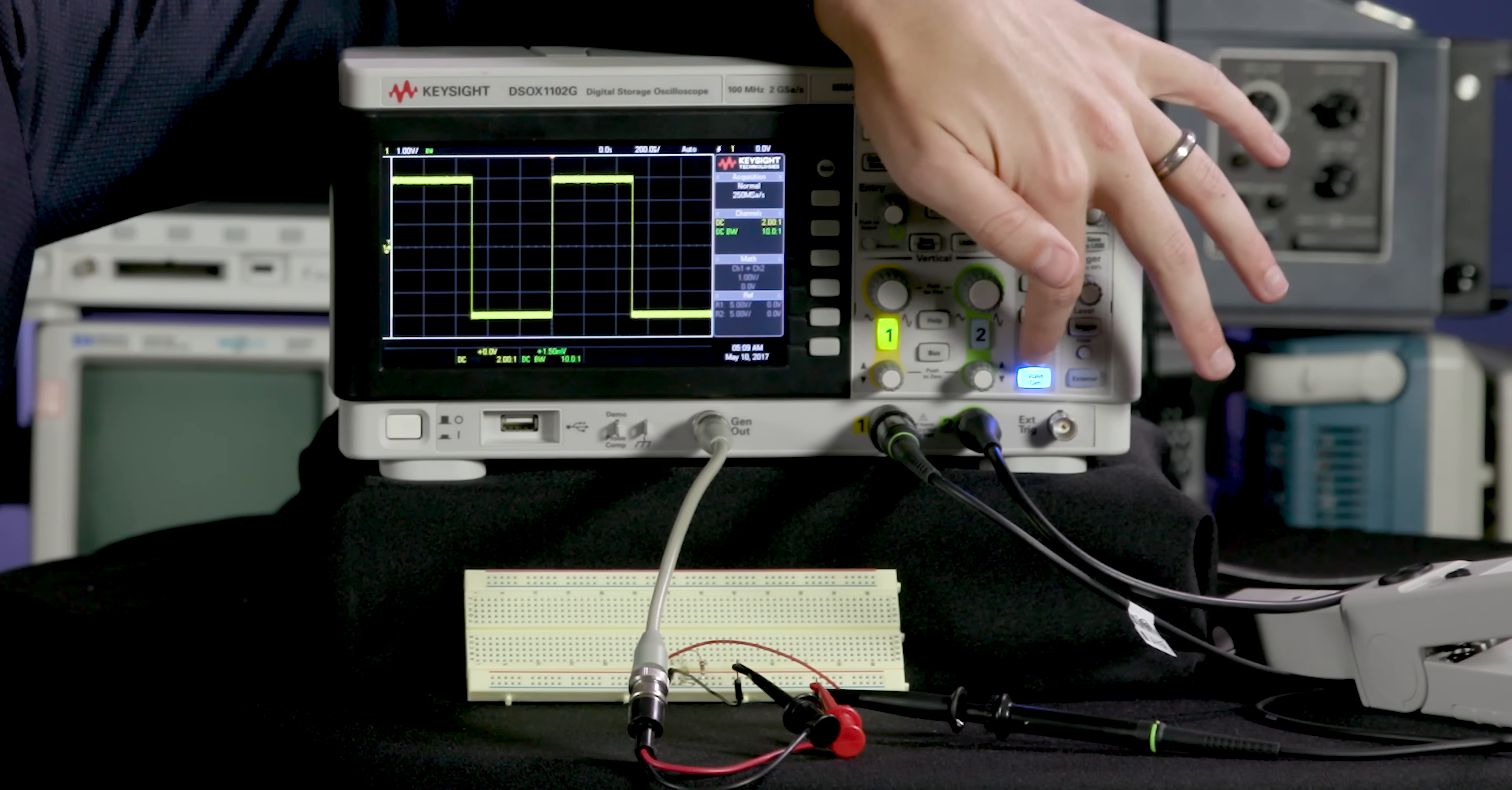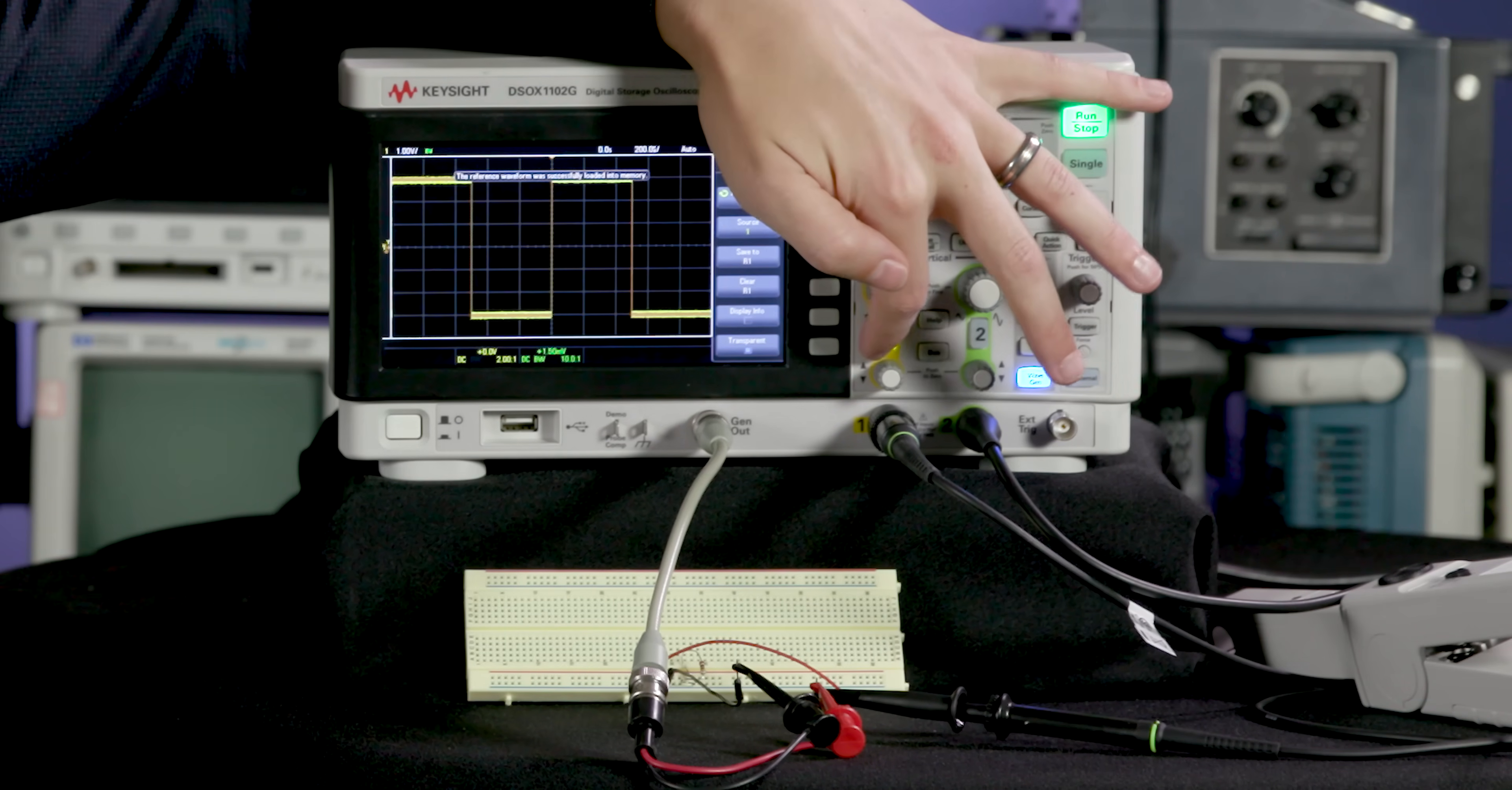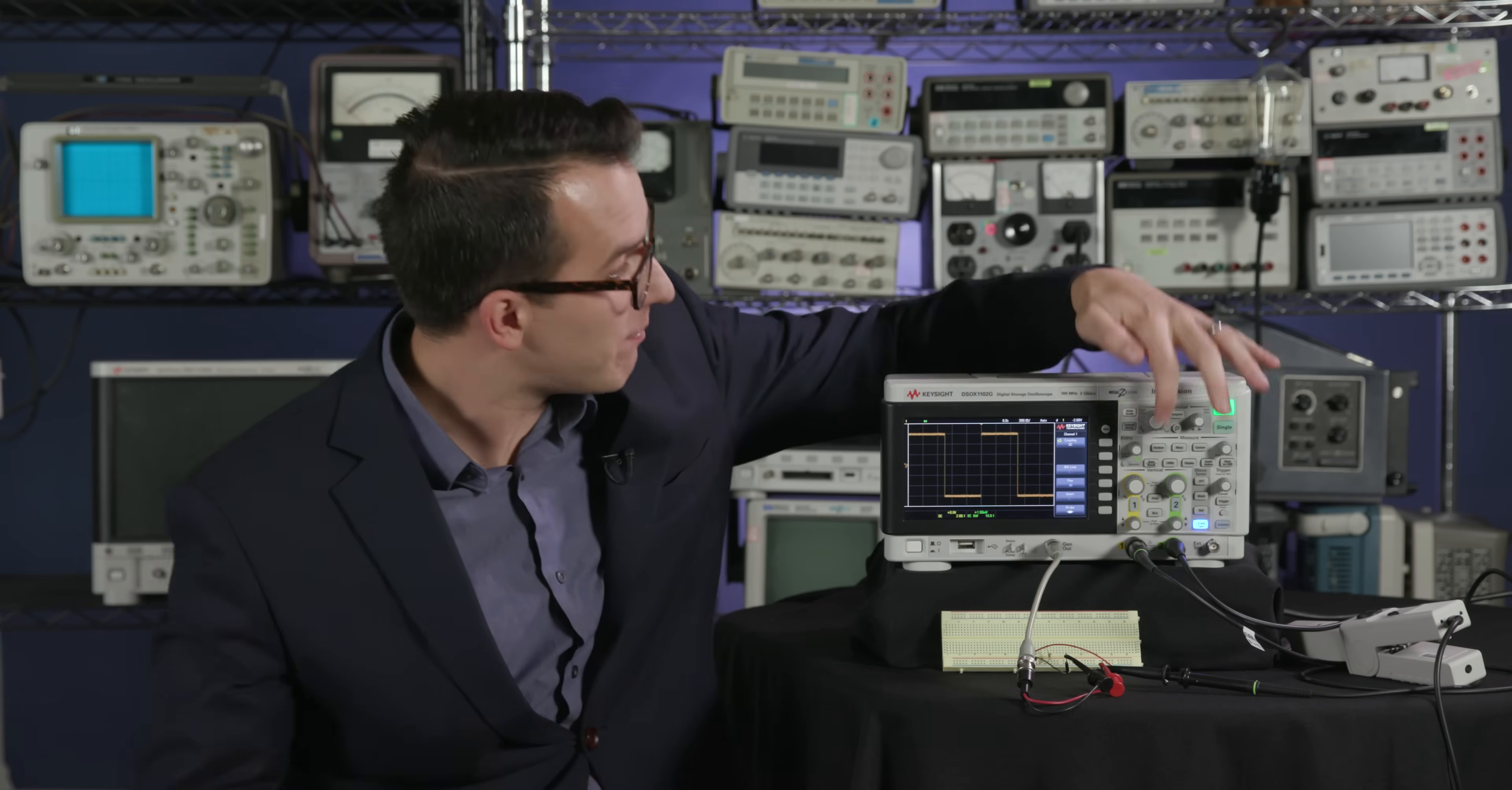I'm going to save this waveform using a reference waveform, so I hit the reference waveform save to r1, and then I'm going to display it on screen so when I turn off channel one you can actually see that waveform there. Now let's turn channel one back on and add the capacitor.